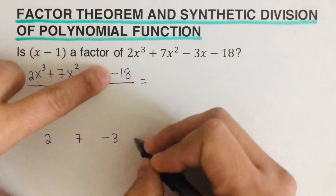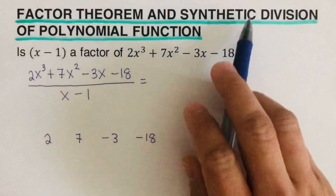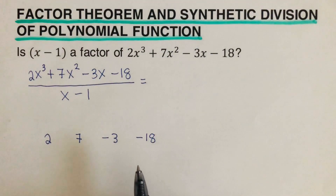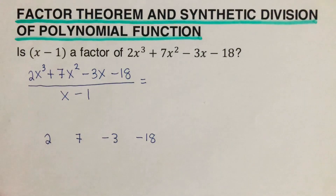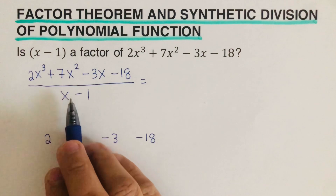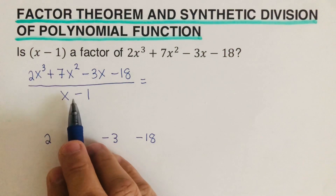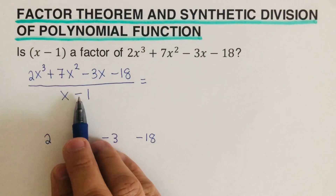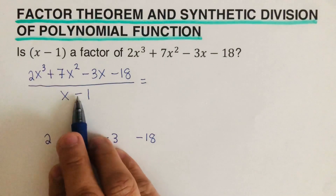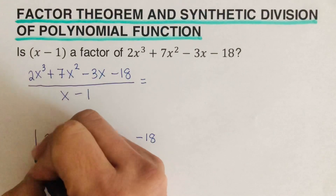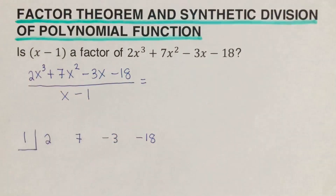We write 2, then positive 7, negative 3, and negative 18. Since this is x minus 1, we use the zero product property to determine the root, which is positive 1. The fastest way is to switch the sign — since this is negative, flip it to positive — so we write a positive 1 as the number we divide by.